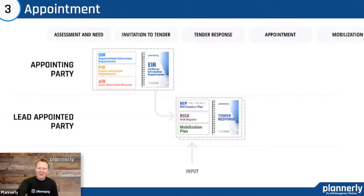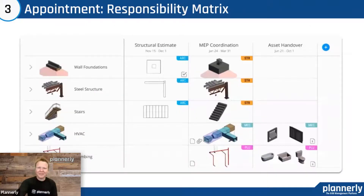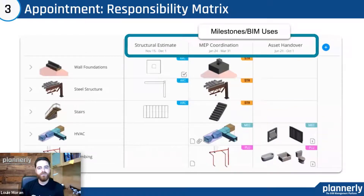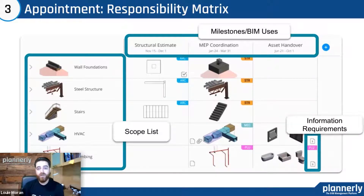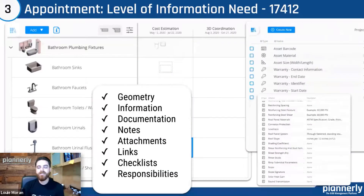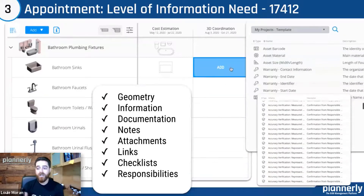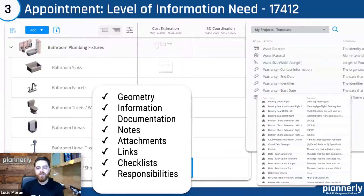Keeping all of that together is very important. In the appointment workflow, we select a lead appointed party who will start to include responsibility — all set up inside the scope with the responsibility matrix, task information, and master information delivery plans. Teams can visually understand the milestones or BIM uses, put in the list of required items — elements or documents — what information is required, who's responsible, and specify the level of information need.